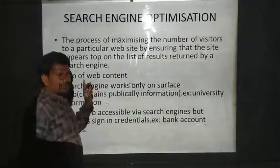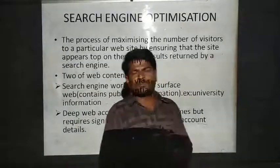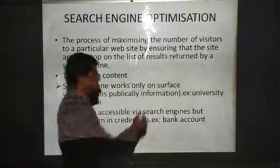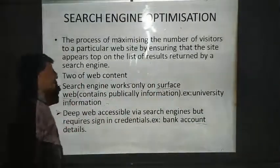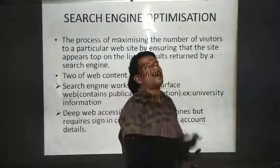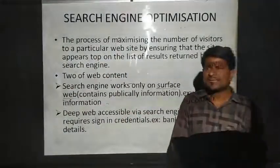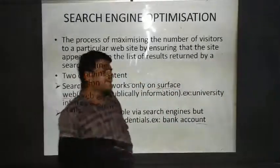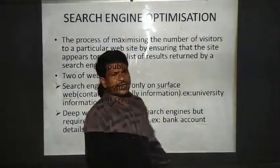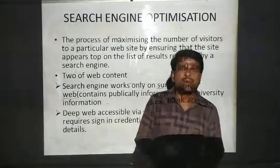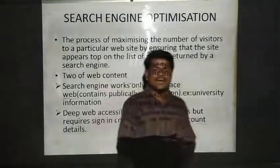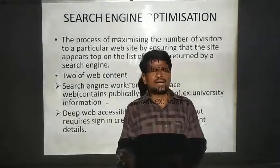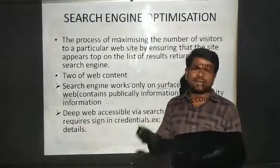In the web, you will see two types of web content. Search engines work only on the surface web. Surface web contains all public information. For example, if you search for a university, you can enter the university name as a keyword and see all the lists provided by the university — courses offered, faculty available — everything publicly.